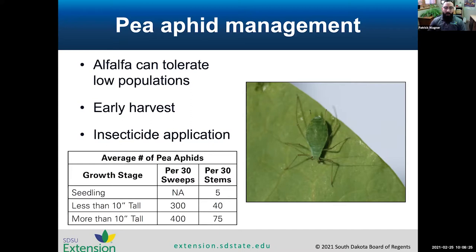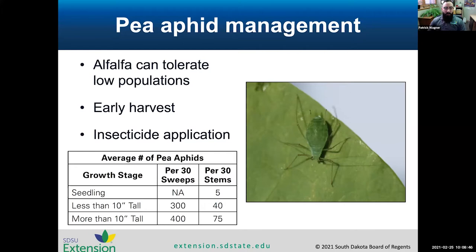Regarding thresholds for pea aphids: if the plants are less than 10 inches tall, you can use a sweep net — the threshold is 300 aphids per 30 sweeps. You can also do stem counts, where the threshold is 40 aphids per 30 stems.